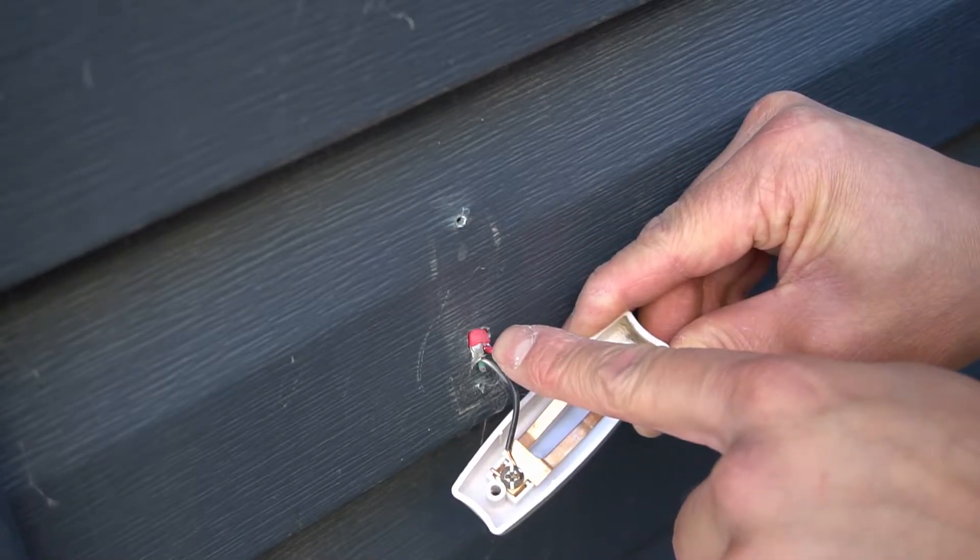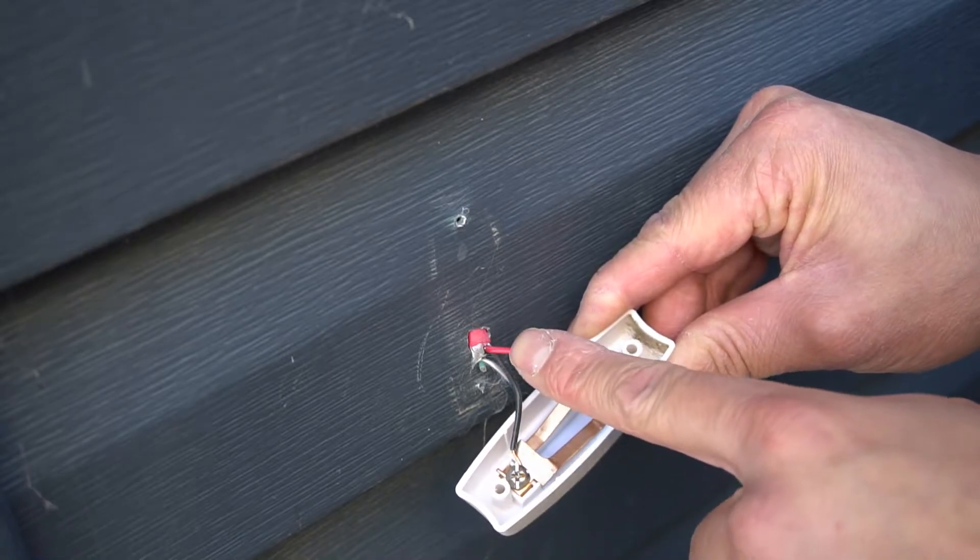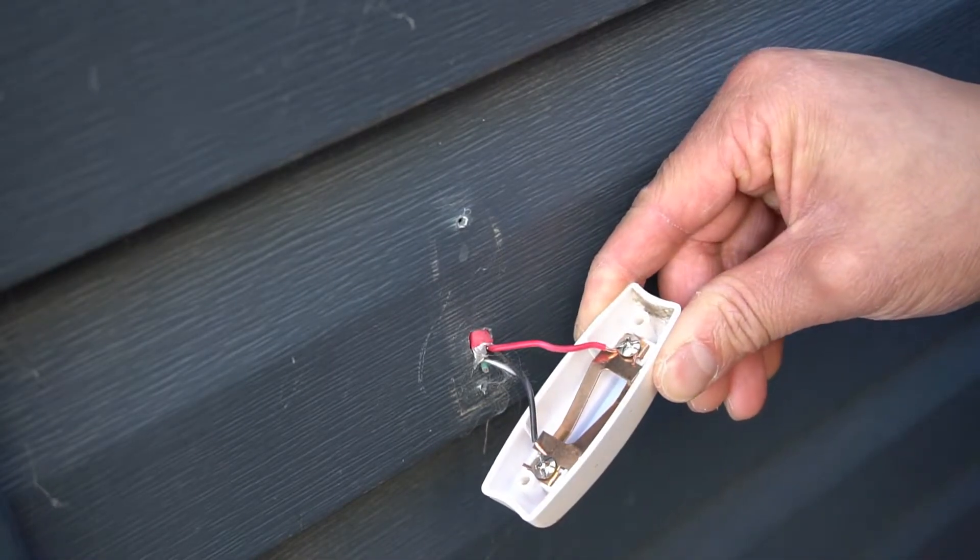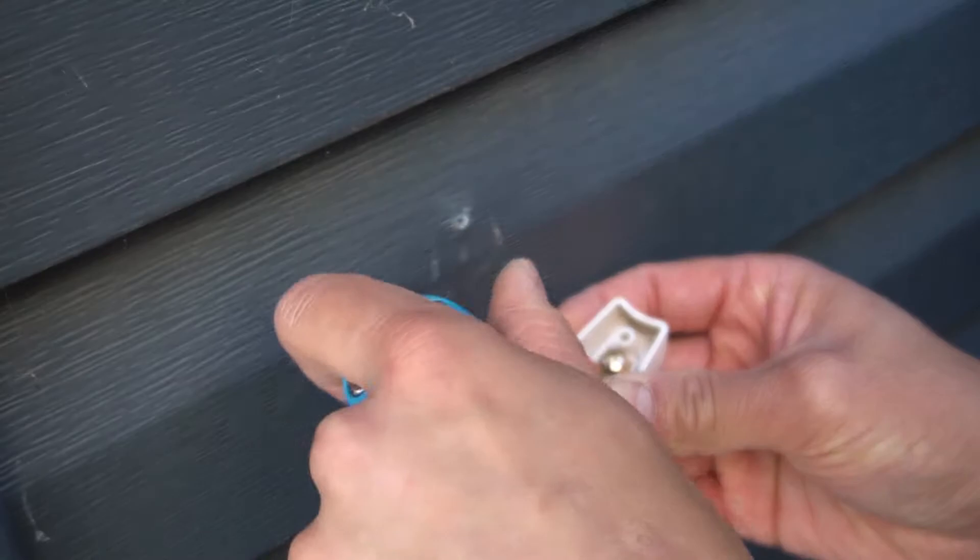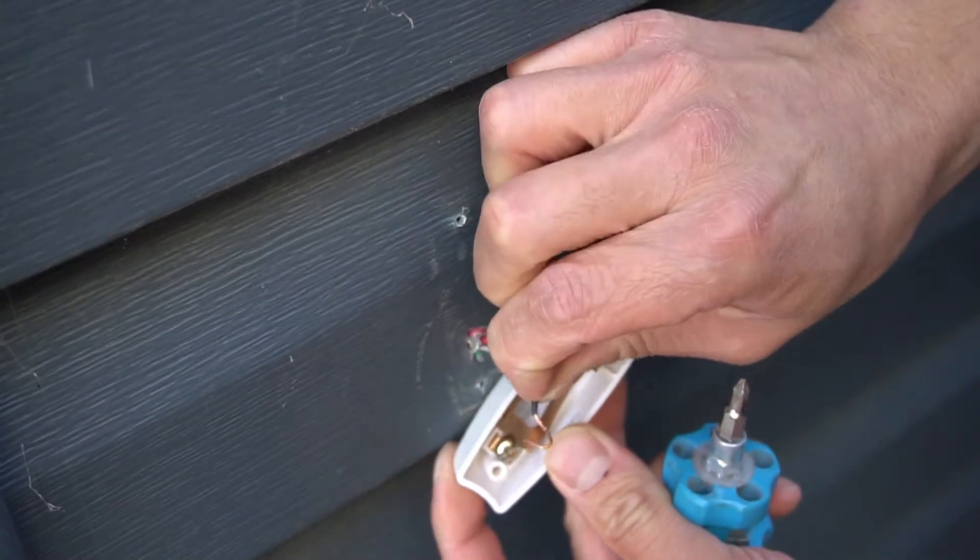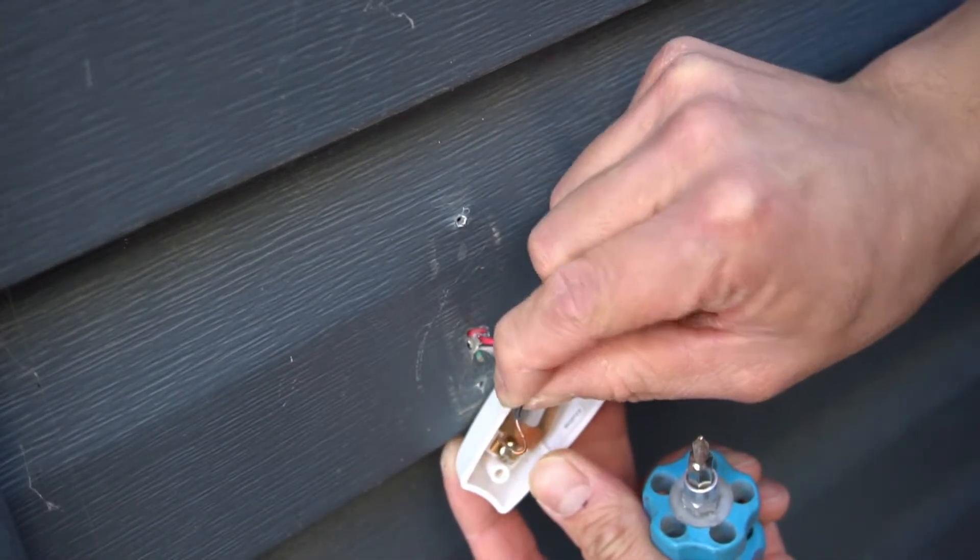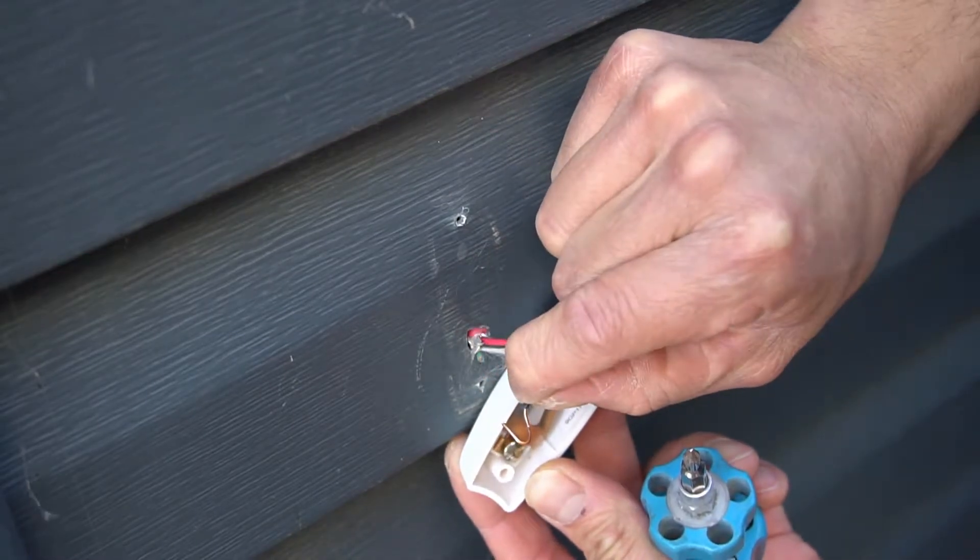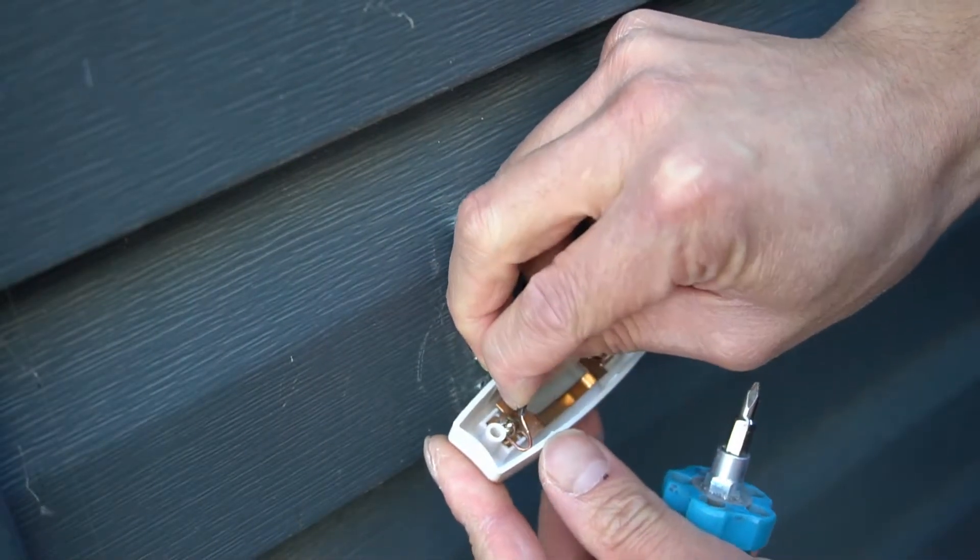When you strip the exterior jacket, be careful not to damage the red and black wire. When you install the wire around the screw, make sure it's pointing in the clockwise direction, in the same direction of how the screw tightens.